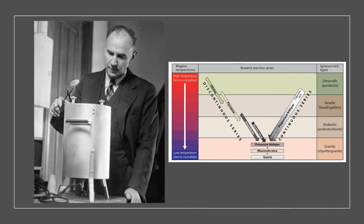Bowen's reaction series is named after the petrologist Norman Bowen, who summarized the crystallization sequence of typical basaltic magma undergoing fractional crystallization. The series is based on observations of natural rocks and experiments he performed in the early 1900s with powdered rock material. He heated the material until it melted and then allowed it to cool to target temperatures, whereupon he observed the composition of the rocks that formed based on the types of minerals that composed them.